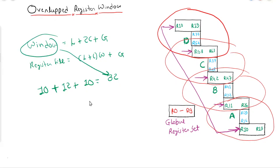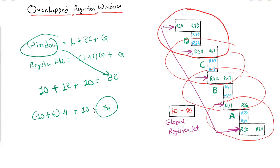In the same way, if we calculate the register file size: 10 local plus 6 shared multiplied by 4 windows plus 10 global gives us 74. So the total number of registers is 74. This is how the overlap register window works and helps in sharing data between processes. With this, we will end this unit.